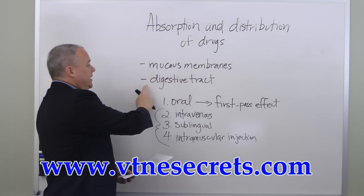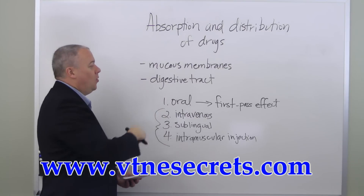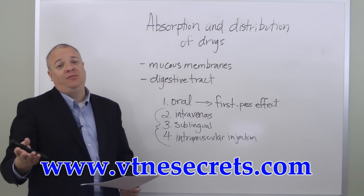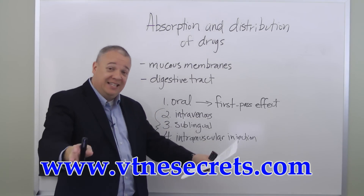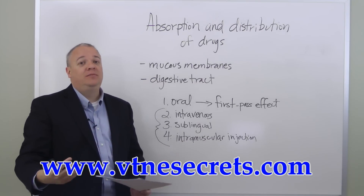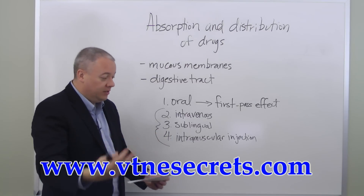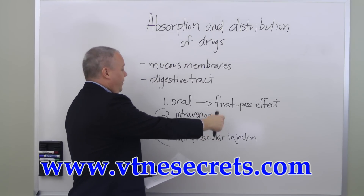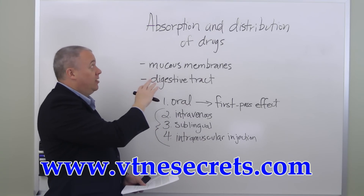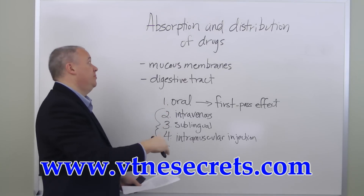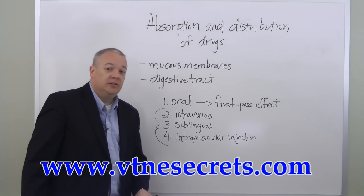In summary, mucous membranes and the digestive tract are the main ways of getting drugs into the system, with most given orally. However, the first-pass effect is a significant problem — the drug must travel to the intestines, to the liver, be metabolized, and then sent out, and much of the benefit is lost in this process. For better, more quickly absorbed drugs with greater distribution, intravenous, sublingual, or intramuscular injection are preferable methods.